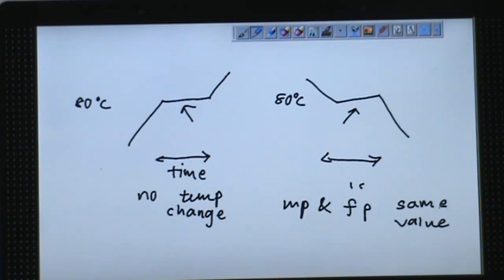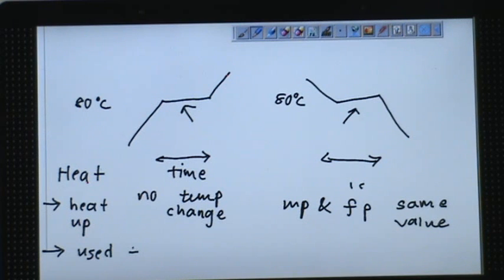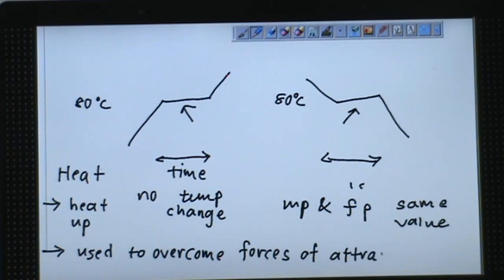So from here, we understand that some of the heat energy is used to overcome the forces of attraction. Heat, in this case, we have two purposes. At times, it is used to heat up, and at times, it is used to overcome forces of attraction. Overcome forces of attraction. That's all for this activity of heating of naphthalene.